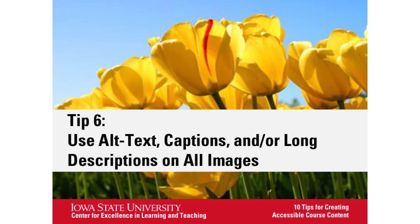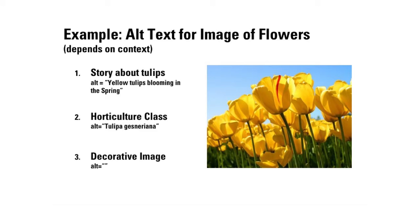Tip six is using alt text, captions, and/or long descriptions on all images. If you were at last week's presentation, we talked about this at more length. The difference in the alt tags — you can do alt tags in Blackboard and also in any Word or iOS/Mac operating system. If it's a story about tulips, you would just say it's a story about tulips and it's spring. If it's for your horticulture class, you could use the botanical name. Or if it's just a decorative image, you just use two little quotes as your alt tag and the reader would skip over it.